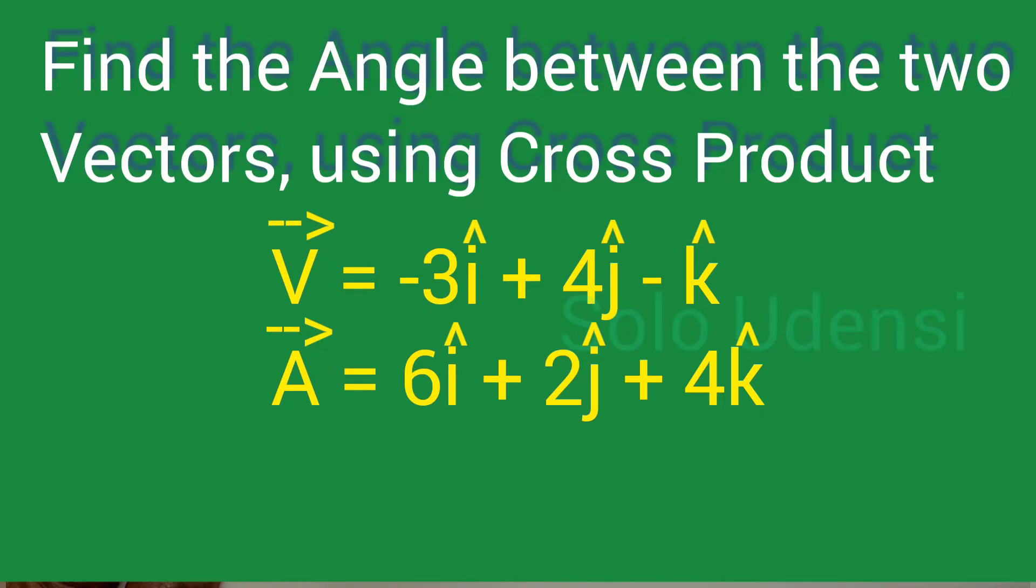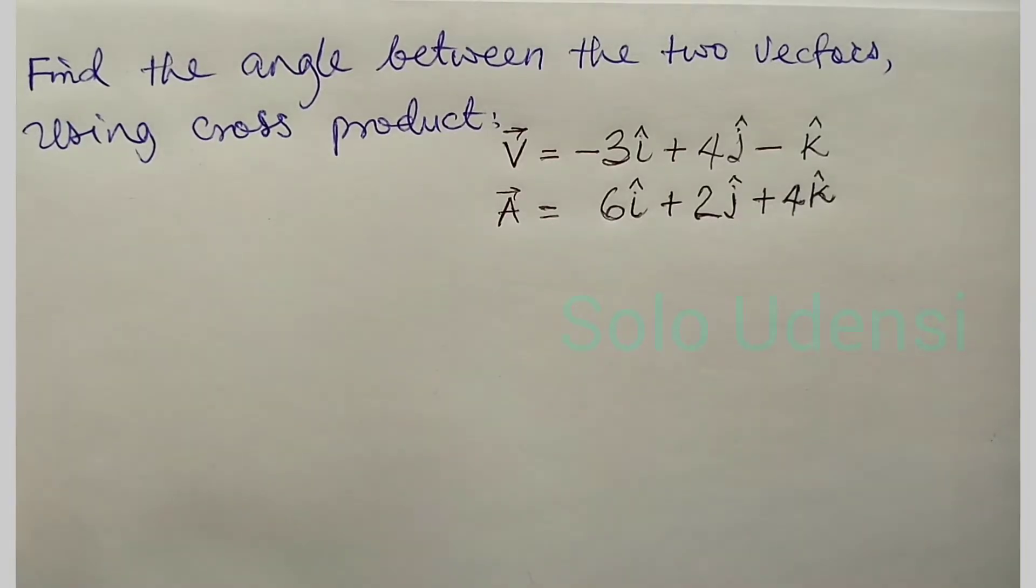Find the angle between the two vectors using cross product or vector product. V is equal to minus 3i hat plus 4j hat minus k hat. And A is equal to 6i hat plus 2j hat plus 4k hat. The formula that we will use here